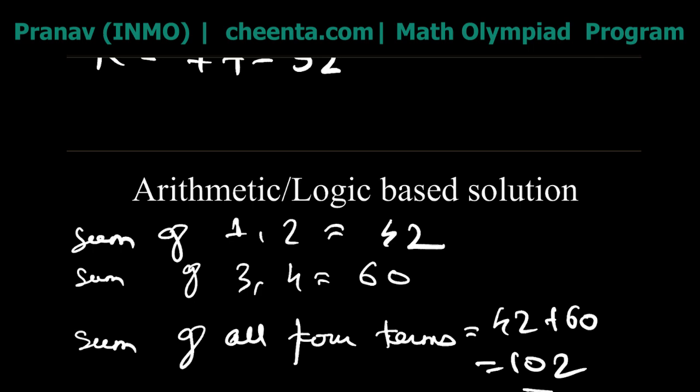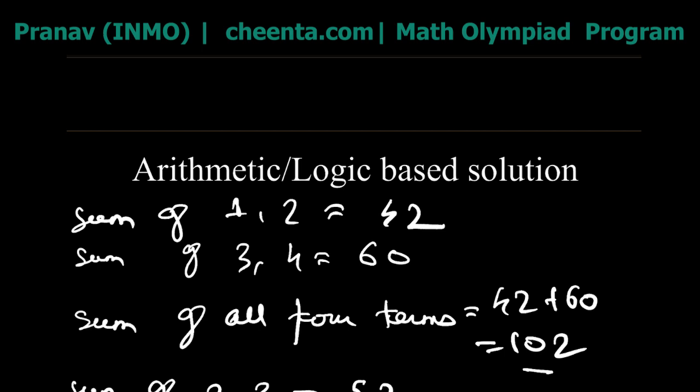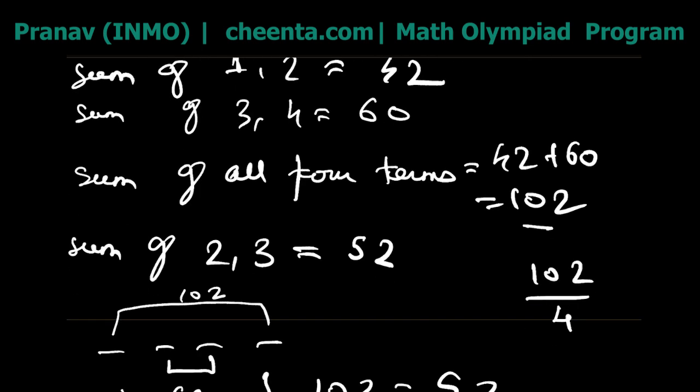Therefore the average of the first and last terms is 50 / 2 = 25 — the same answer as before. Here we didn't need much algebra; it was just an observation that they gave us the sum of the first and second terms, and the sum of the third and fourth terms, letting us find the total sum. Subtracting the sum of the middle two terms gave us the sum of the first and last, and dividing by 2 gave our answer. That was a slightly more logical and analytical solution.